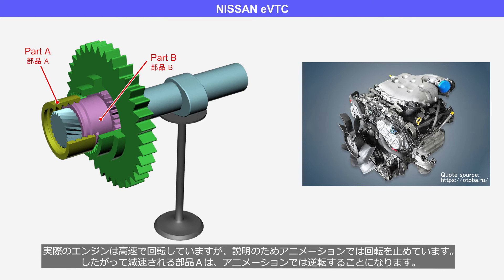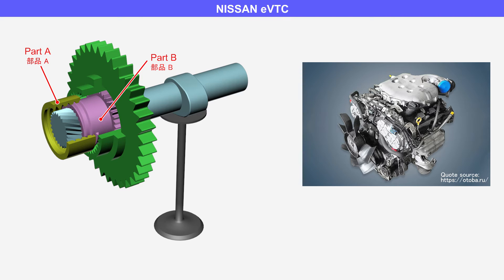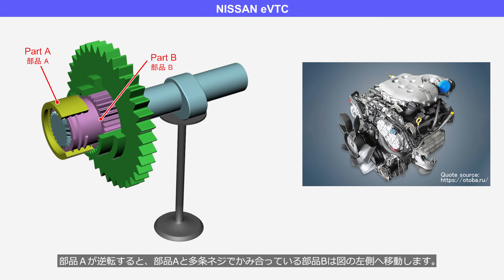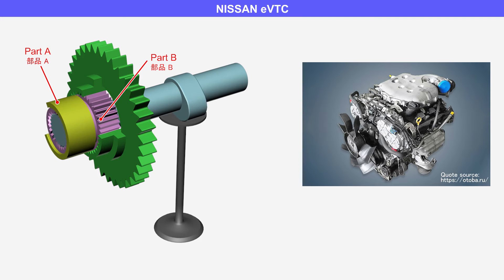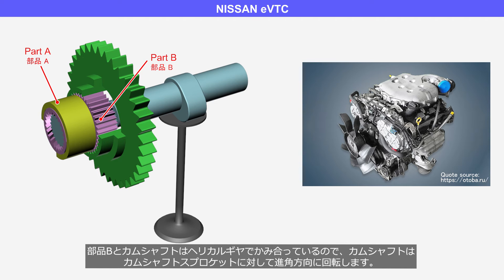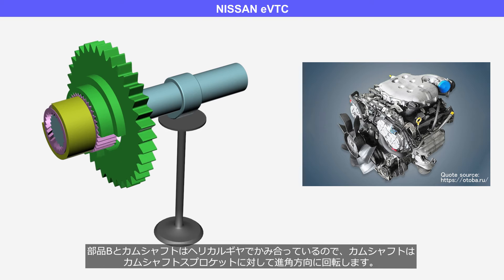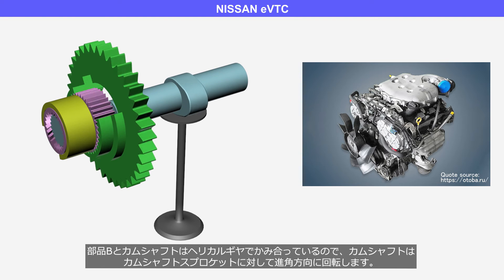In an actual engine it rotates at high speed, but in this animation the rotation is halted for the explanation. Therefore, part A that is decelerated appears to rotate in the opposite direction. When part A reverses, part B, which is engaged to part A through a screw gear, moves towards the left side of the screen. As a result, since part B is engaged to the camshaft through a helical gear, the camshaft rotates in the advanced direction relative to the camshaft sprocket.